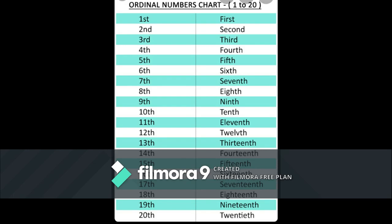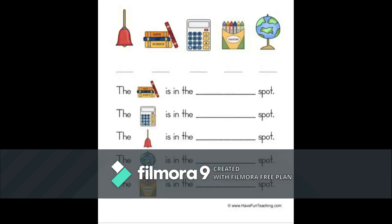Just like that, you have to read the number. Okay children, moving to the next slide. In this slide, you have to find out the rank of a particular object. Here you can see some pictures like bell, books, calculator, colors, and globe. You have to find out the position of each object. In the first question, you have to find out the position of a book. So, which spot is the book in?